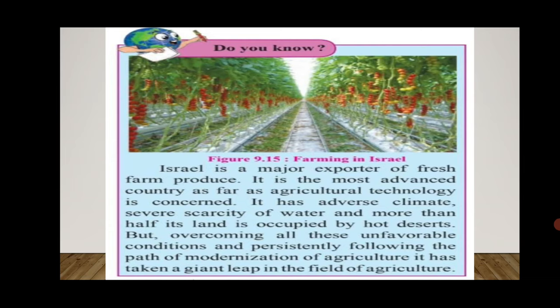Israel is a major exporter of fresh farm produce and the most advanced country in agricultural technology. It has adverse climate, severe scarcity of water, and more than half its land is occupied by hot deserts. But overcoming all these unfavorable conditions and persistently following the path of modernization of agriculture, it has taken a giant leap in the field of agriculture. With that, we have completed the chapter on agriculture. Do read the textbook for a better understanding. Stay safe, keep learning, and thank you.